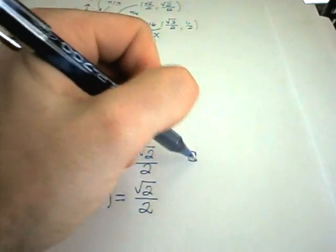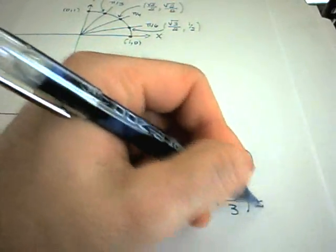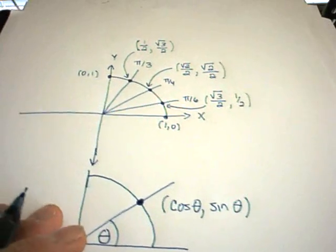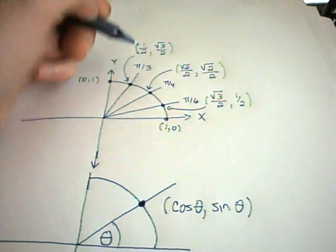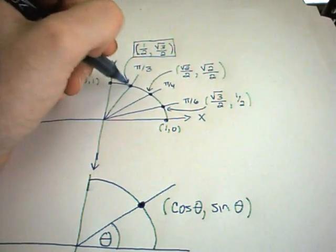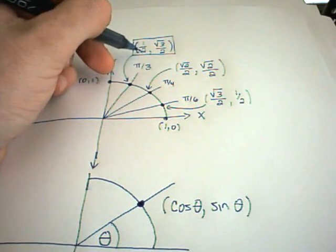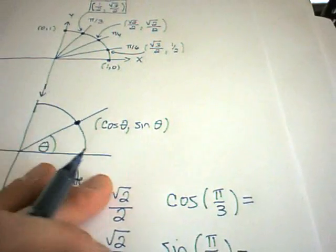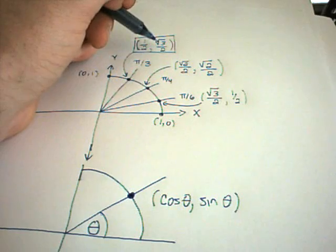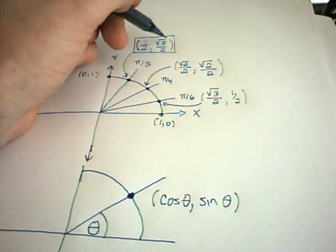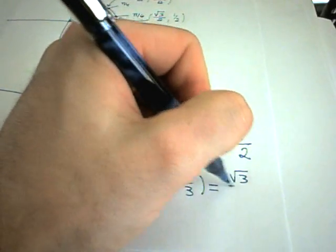Suppose we wanted to evaluate cosine of π over 3 and sine of π over 3. You would need to have these values memorized. I find the angle π over 3 on the circle — it hits the unit circle at the values 1 half comma square root of 3 over 2. Cosine goes with the x-coordinate, so cosine of π over 3 is 1 half. Sine of π over 3 is the y-coordinate, which is square root of 3 over 2.